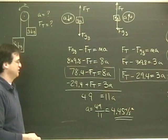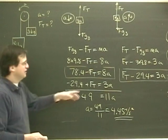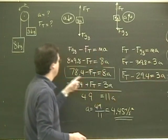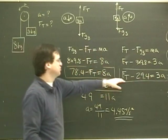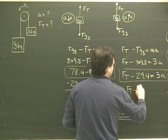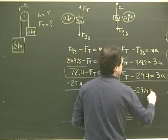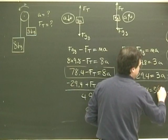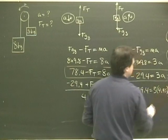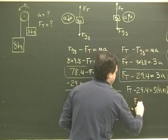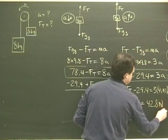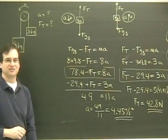Now what I want to do is find the tension. To find the tension, I can solve for using this formula, because I have the acceleration, or this formula. So I'm going to use this one over here. The tension minus 29.4 equals 3 times the acceleration, which was 4.45. And so the tension is equal to 42.8 newtons. And that's it.